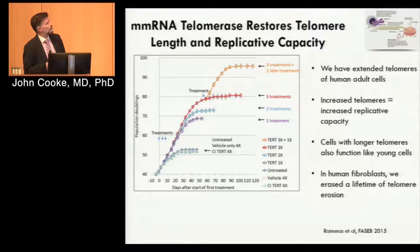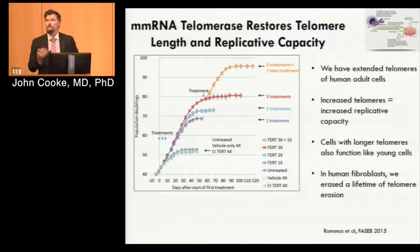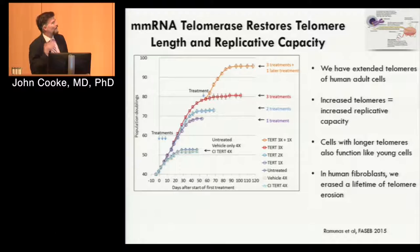The endothelial cells didn't respond quite as well — we got a benefit, but we now have a much better understanding of why some cells are more responsive to telomerase than other types of cells. That's intellectual property I can't discuss today. But we have learned that fibroblasts are the champions in terms of responding to telomerase, while other cells can also respond to RNA telomerase with the right approaches. There's a lot of opportunity here for rejuvenating cells.